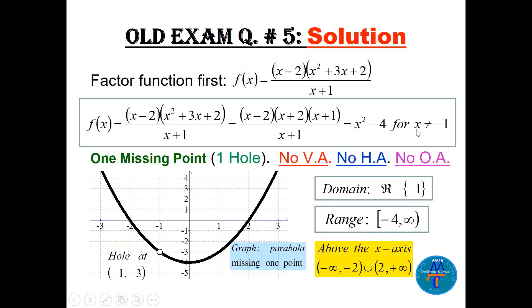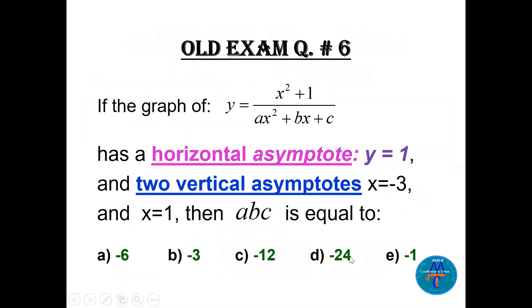The graph is a parabola with one hole. To find the hole: substitute x = -1 into x² - 4 to get -3, so the hole is at (-1, -3). The domain is all real numbers except x = -1. The range is [-4, ∞) excluding y = -3 at the missing point — but since there is another point at y = -3, the range remains [-4, ∞). The graph is above the x-axis for x ∈ (-∞, -2) ∪ (2, ∞).